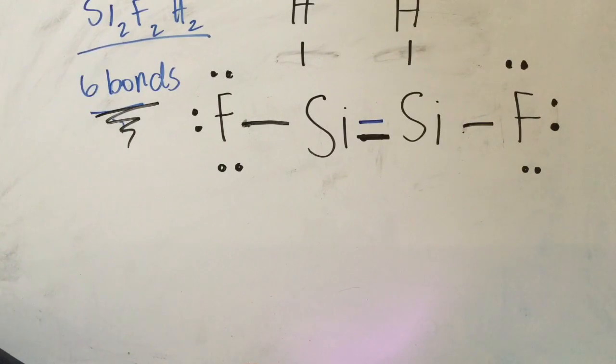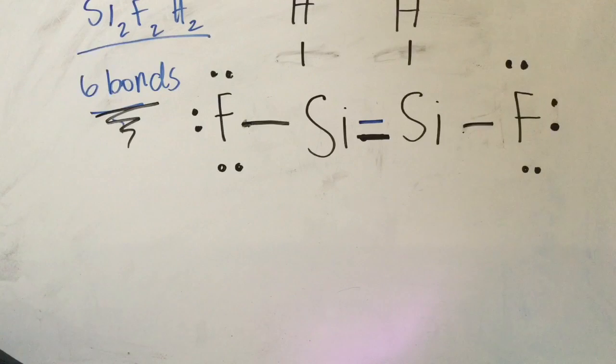With all of this in mind, we have finally completed the Lewis dot structure for Silicon 2, Fluorine 2, Hydrogen 2.